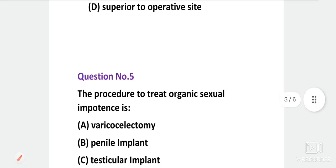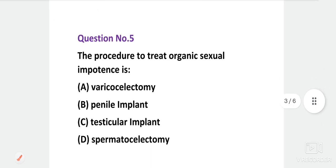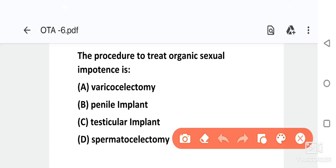Next question. The procedure used to treat organic sexual impotence is? Options are varicoelectomy, penile implant, testicular implant or spermatocelectomy. The correct option is in the comment section. The correct answer is penile implant.